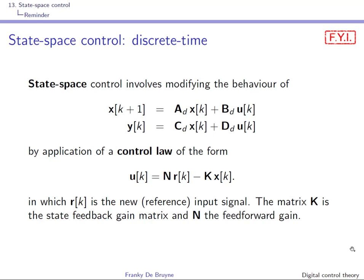In discrete time, everything is the same except that everything is based on the discrete time state space description that takes into account the zero-order hold mechanism. We have the same type of control law. We have to make sure that the poles of the closed loop system...